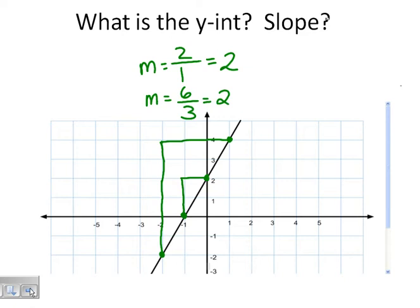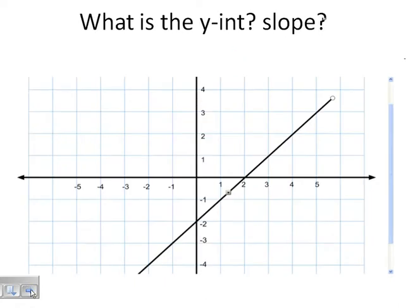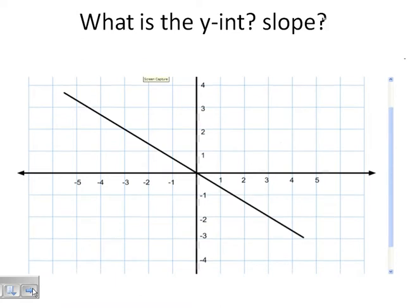Another example: looking at this graph, it doesn't matter which points you use. We choose two points and find our rise, which is 3, and our run, which is also 3. So our slope is 1.